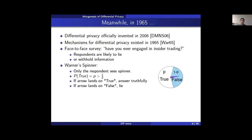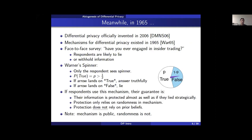Randomized response is a technique that relies on a spinner. Only the respondent sees the spinner. It has a true region occupying proportion P of the area and a false region occupying proportion 1 minus P, where P is strictly between one-half and 1. If the spinner lands on true, the respondent answers truthfully; if it lands on false, the respondent is supposed to lie.